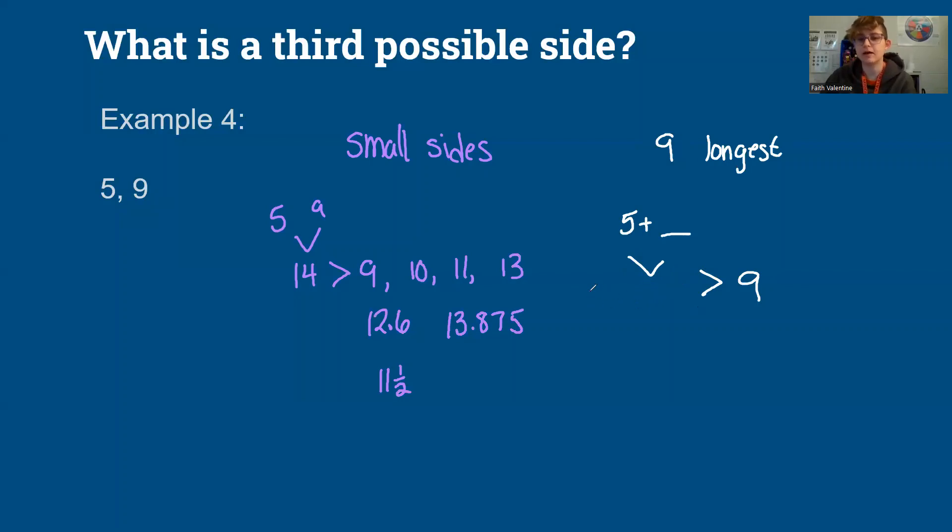So I can be five, five plus five is 10. I could be six, seven, eight, or nine. Because five plus nine is 14 and 14 is greater than nine.